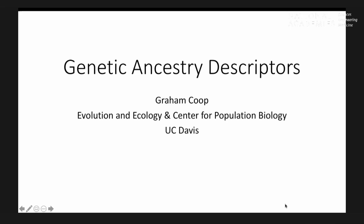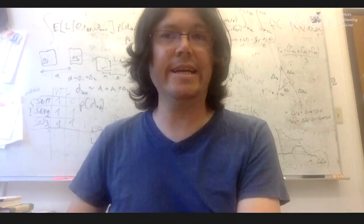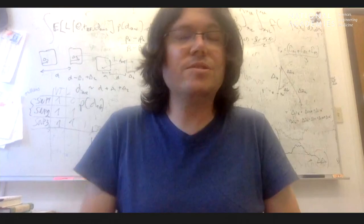For our final talk, it'll be Dr. Graham Coop from the Department of Ecology and Evolutionary Biology at UC Davis. Hopefully you're seeing my slides and you can hear me. So thank you for inviting me to talk on this important topic. I've learned a lot from the talks this morning and from the previous session. I thought it would be useful to take a step back as a population geneticist and talk about this use of genetic ancestry descriptors.